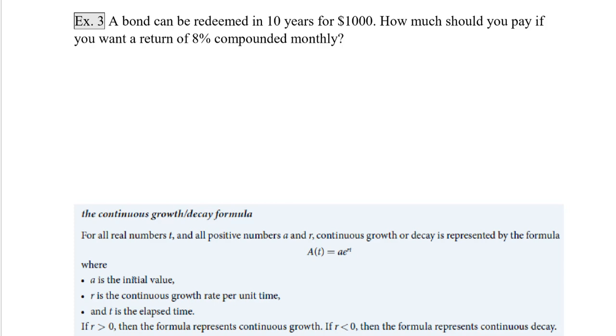In example 3, we're going to be talking about a bond. And a bond is a savings instrument where you buy a bond that has a certain face value, but it won't reach that face value until a certain number of years. So example 3 says: a bond can be redeemed in 10 years for $1,000. How much should you pay if you want a return of 8% compounded monthly? So we are going to say that our final amount will be $1,000. What we want to find is our principal or our initial investment. And then we're going to have 1 plus, now 8% as a decimal is 0.08.